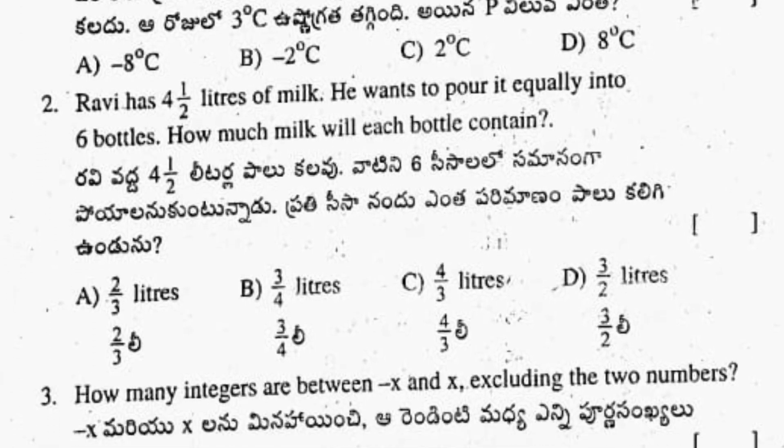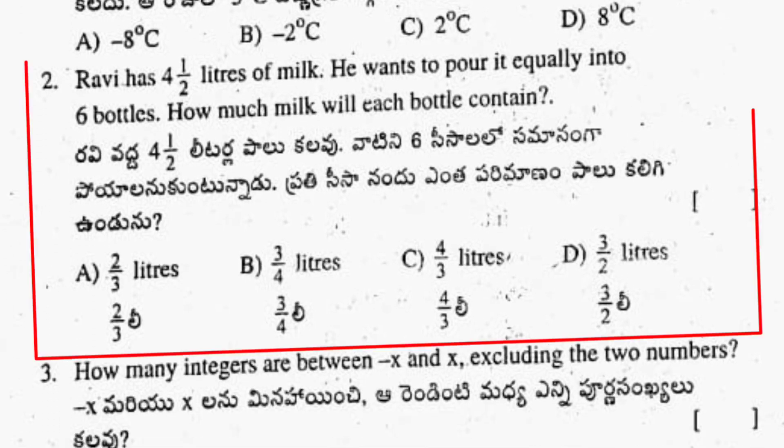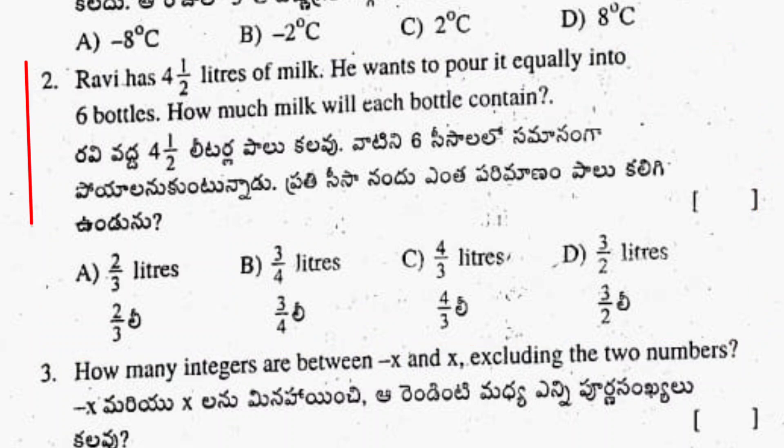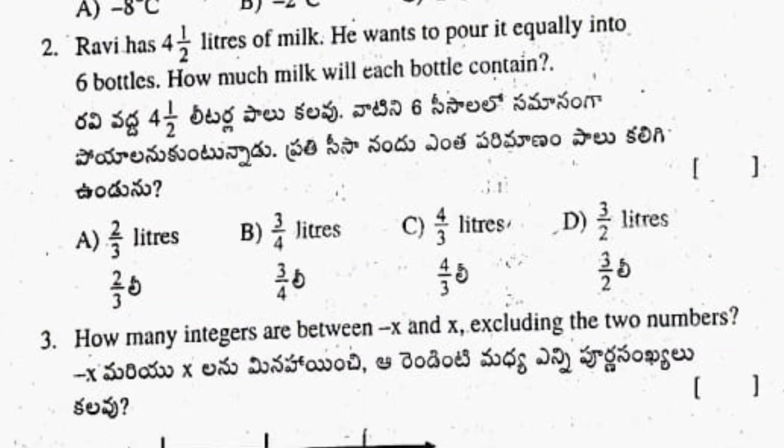First question: option B is the correct answer. Second question: option B is the correct answer. Next is the third question.